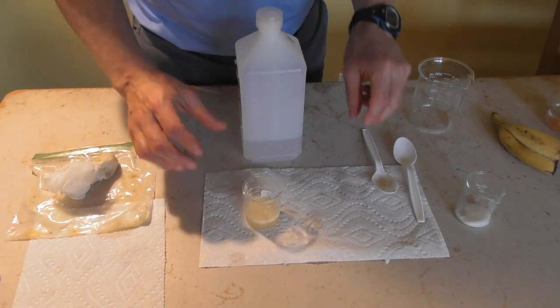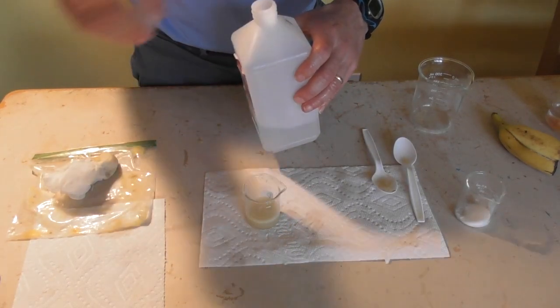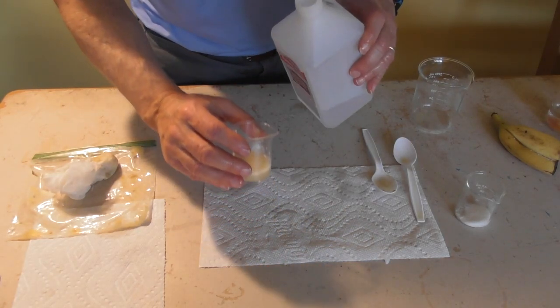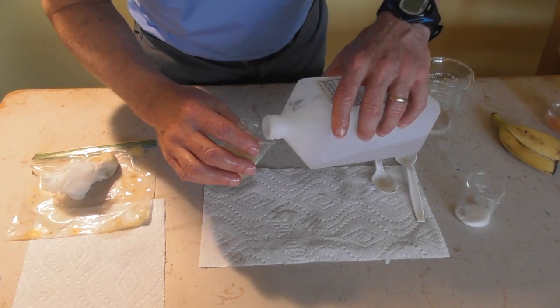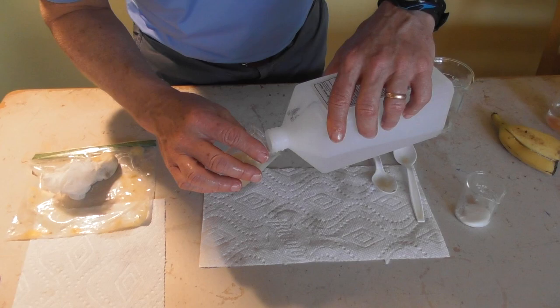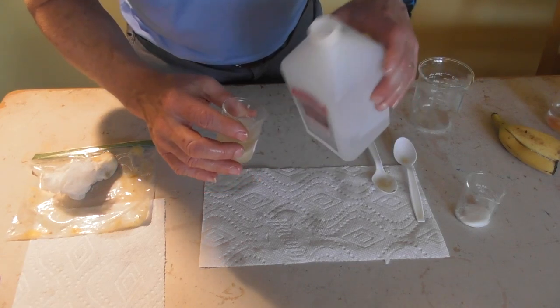We stirred it slowly for about a minute and now what we do is we add some rubbing alcohol. Now alcohol has a less density of the banana juice and what it does is it basically, due to density, pulls the DNA to the surface of the rubbing alcohol. And I'm going to pour about a 50-50 mixture.